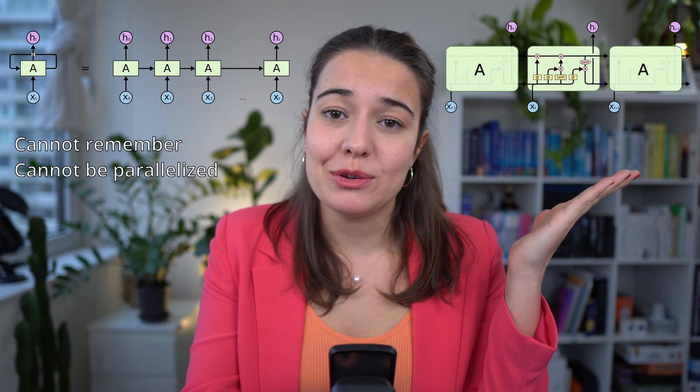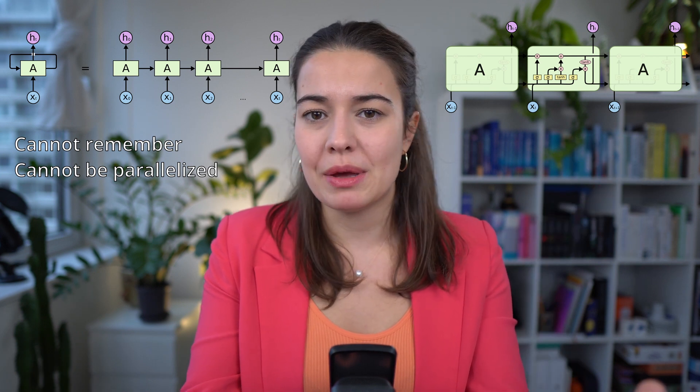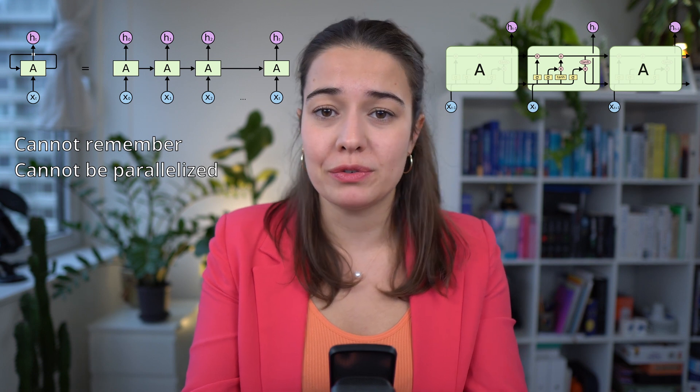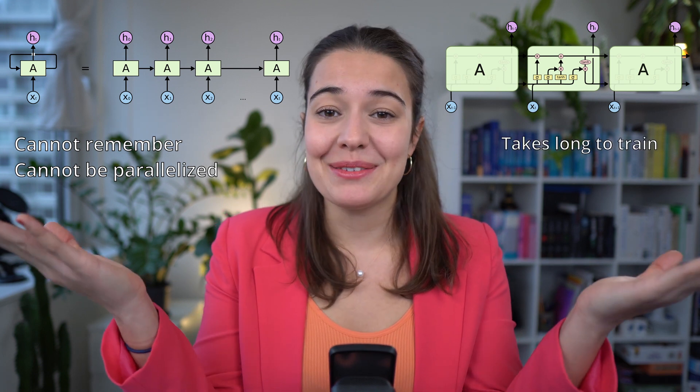Before Transformers, we were using RNNs to deal with text data or any sequence data. The problem with RNNs is that when you give them a very long sentence, they tend to forget the beginning of the sentence by the time they reach the end. And because they rely on recurrence, they cannot be parallelized. Then we started using LSTMs, which are more sophisticated and remember information for longer, but they take very long to train. Then we have Transformers.